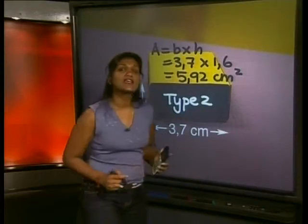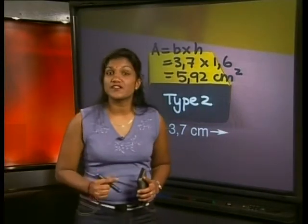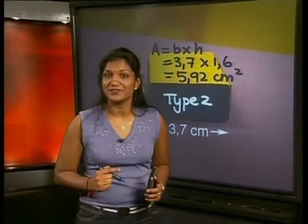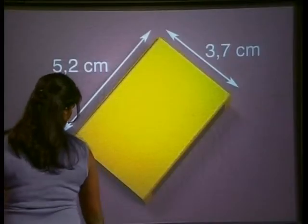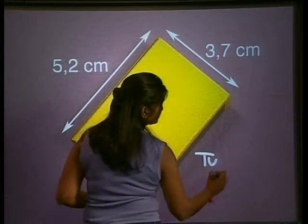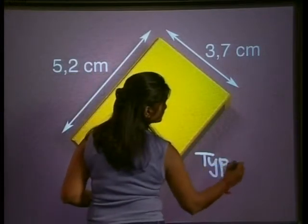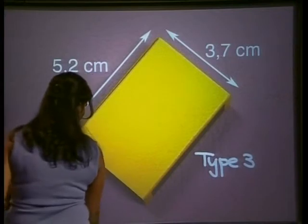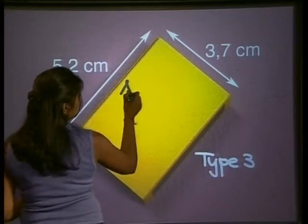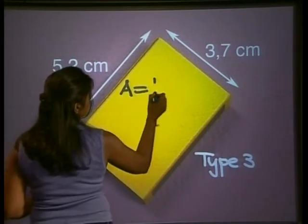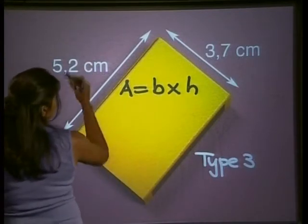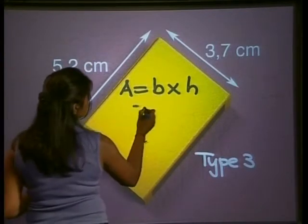There is one more type of surface to work out: the top face rectangle. We'll call this rectangle type 3. We write down the area of the rectangle, which is area equals base times height. The base here is 5.2 cm.